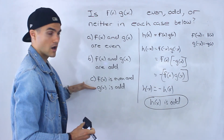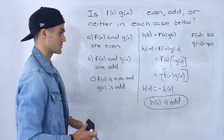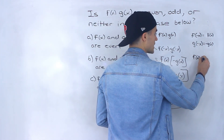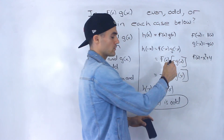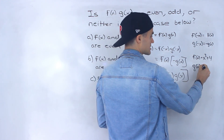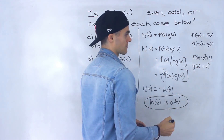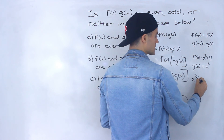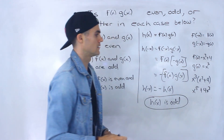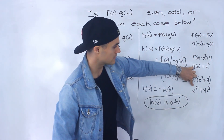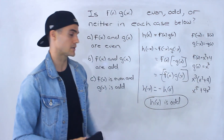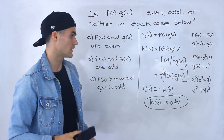So even, even, odd — those are the answers for the three cases. You can test this: take f(x) = x² + 4, an even function, and g(x) = x³, an odd function. Multiplying gives x³(x² + 4), which expands to x⁵ + 4x³. Notice all the exponents are odd, so that multiplication ends up being an odd function.